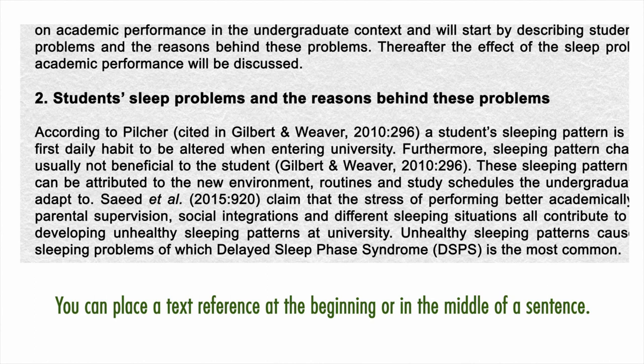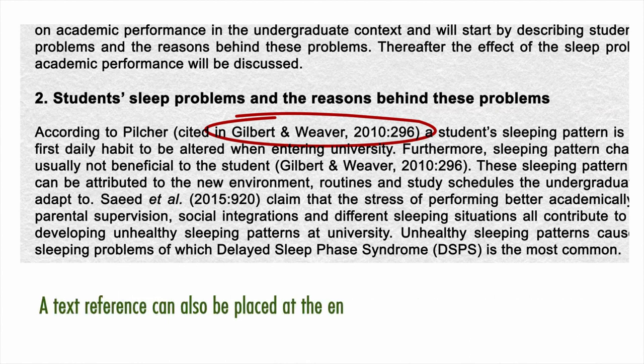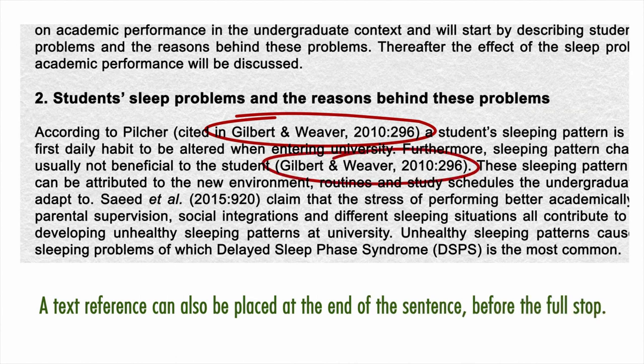You can place a text reference at the beginning or in the middle of a sentence. In these cases, the author's surname usually forms part of the sentence. A text reference can also be placed at the end of the sentence, before the full stop. In this case, the author's surname falls within the brackets.